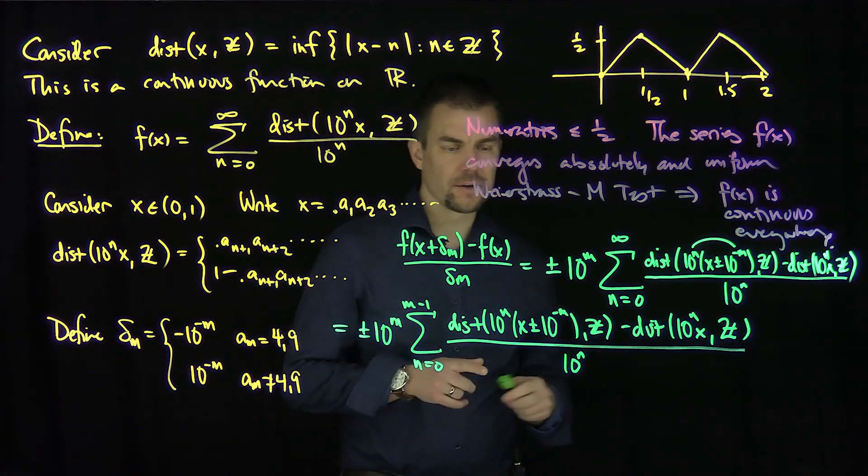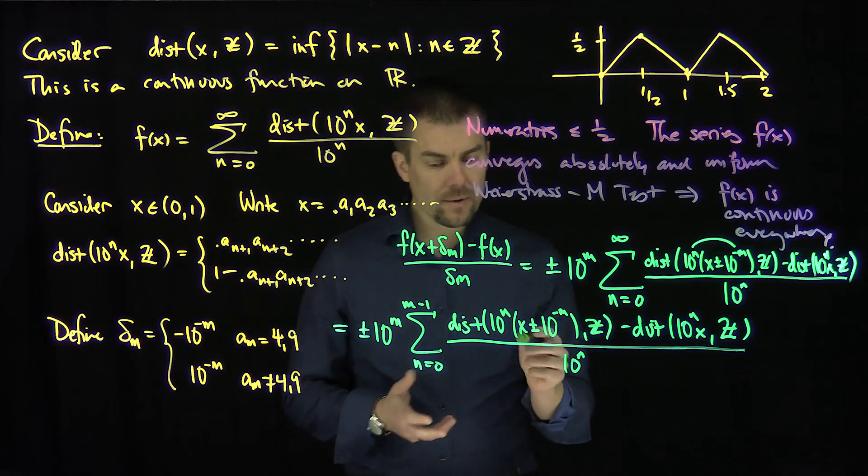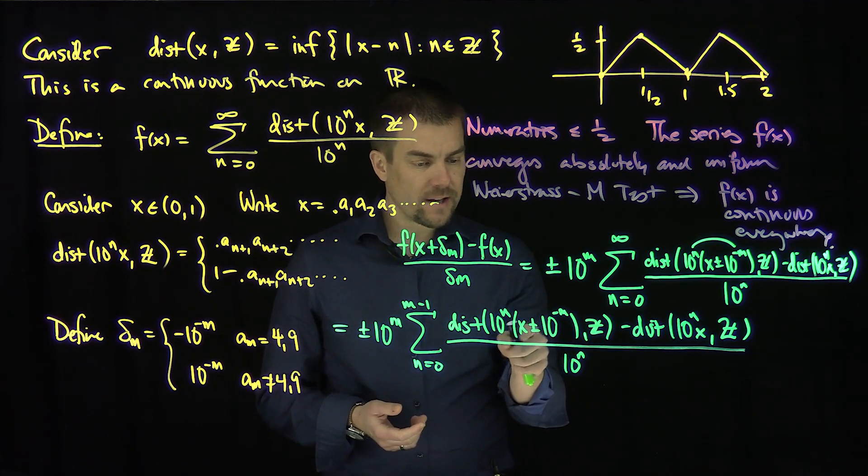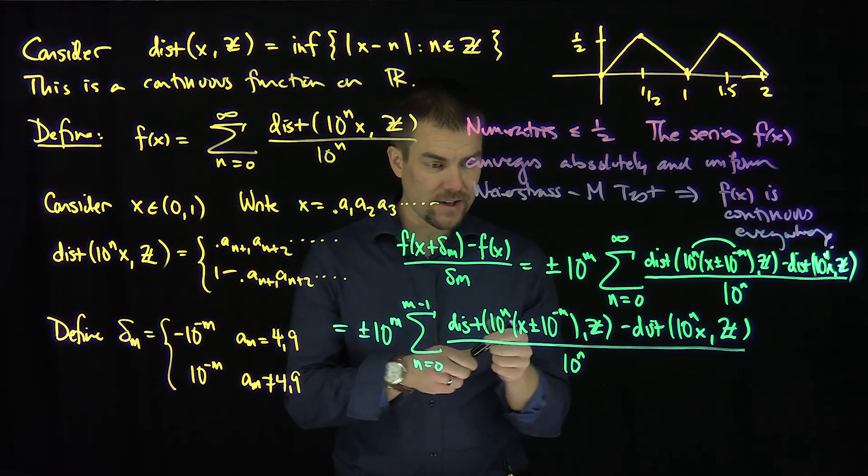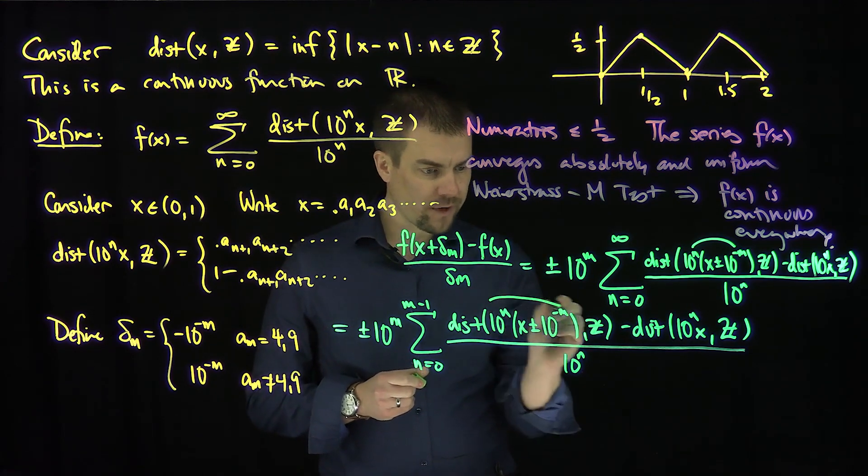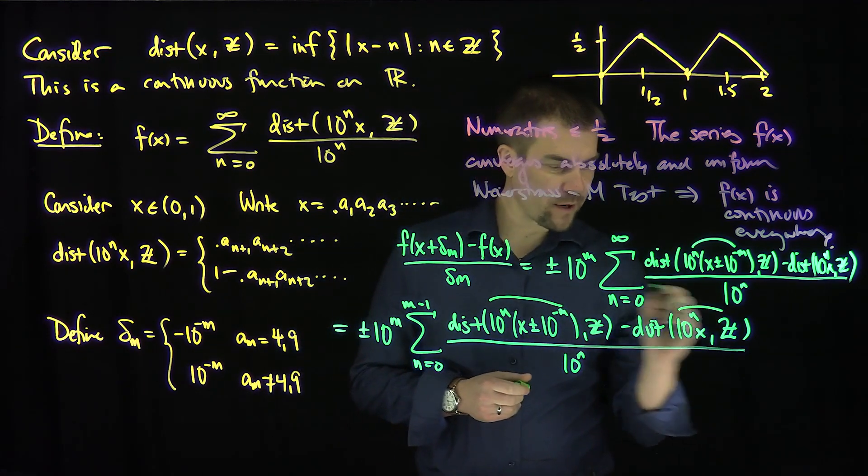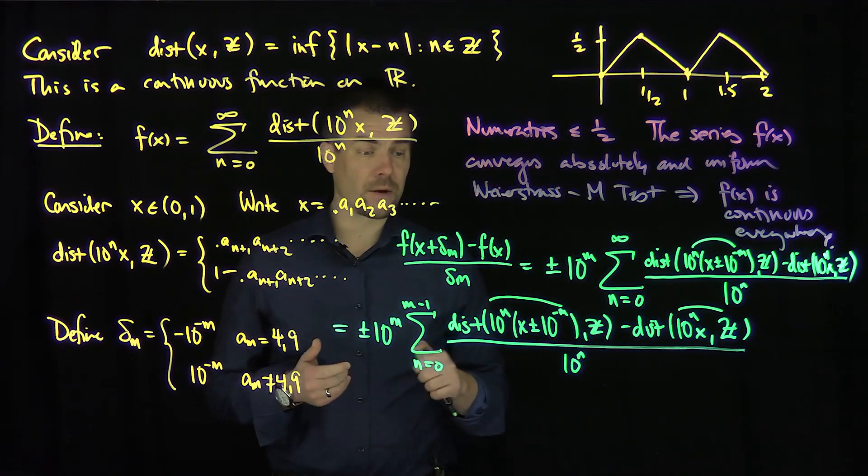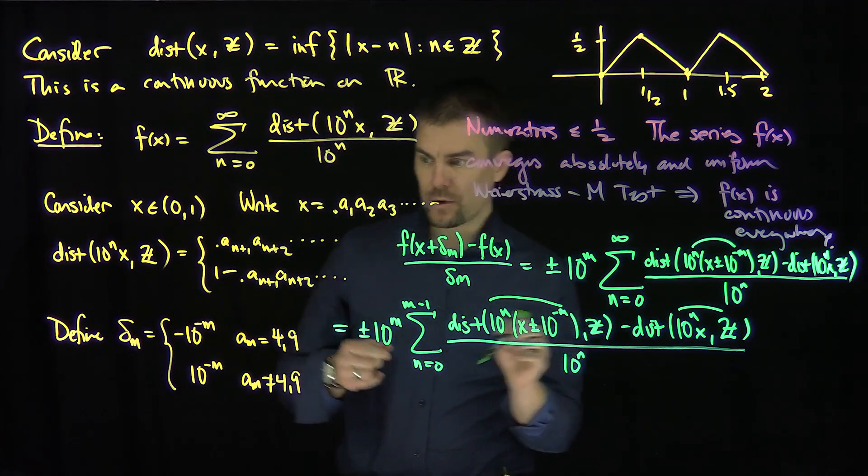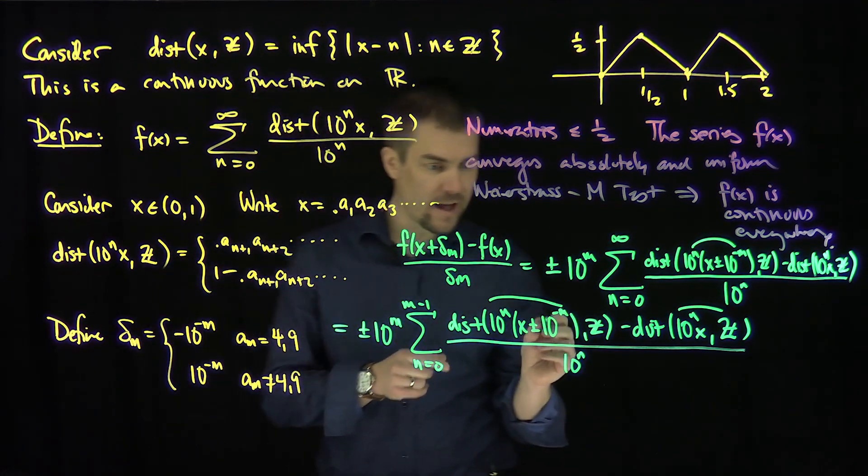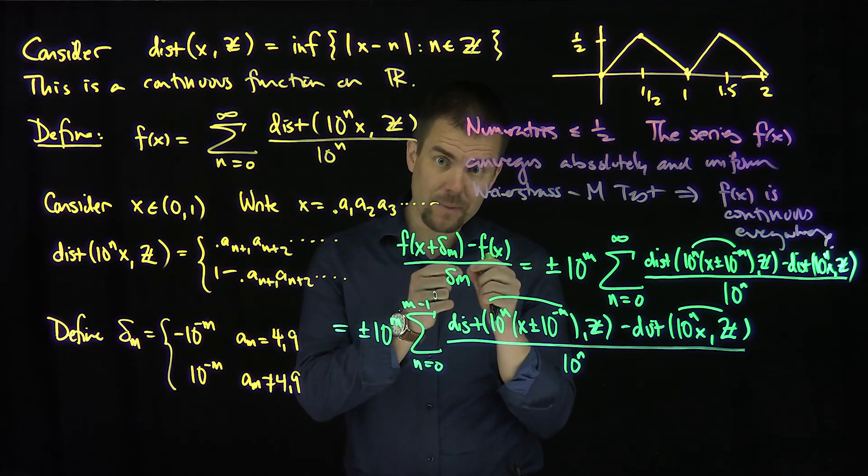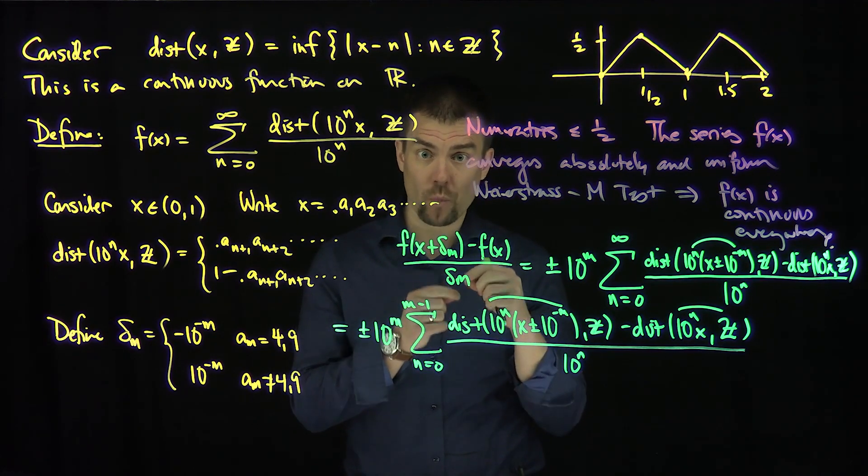Now, the important thing to realize here is: what happens? The difference in the distance from this point to the integers and this point to the integers is exactly going to be equal to what? You're only changing the mth unit in the decimal expansion. The mth spot is being changed by a plus or minus one.